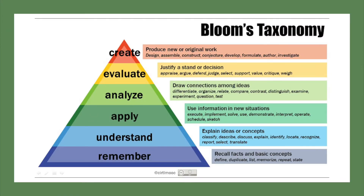The fifth level of Bloom's Taxonomy is evaluating. At this level, you are making a judgment and justifying a decision that is made. For example, which restaurant do you prefer and why? This is hopefully based on some analysis and not just a feeling, so one has to have a deeper understanding of the concept.